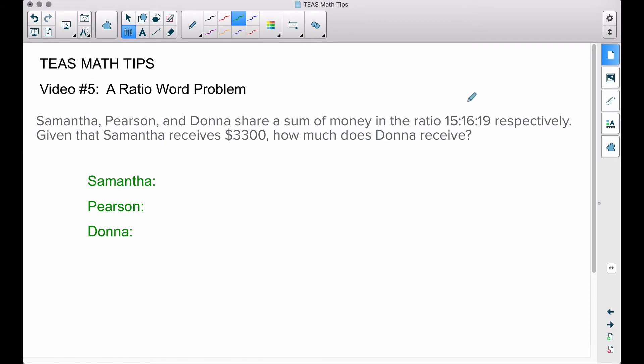So I refer to these pieces as parts. Samantha gets 15 parts, well she actually gets 15/50 of the entire amount of money, and where do I get 50 from? That's the sum of these three parts. The sum of the parts make the whole. 15 plus 16 plus 19 gives us that denominator of 50.